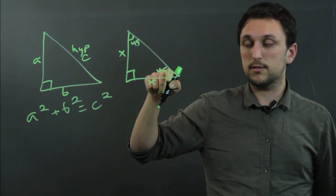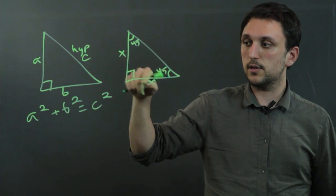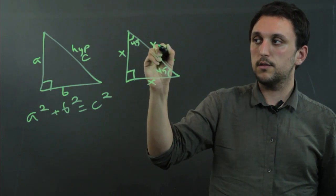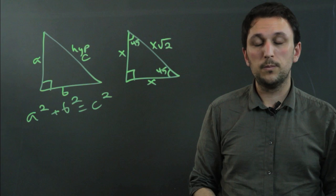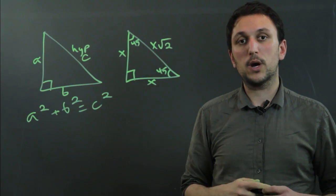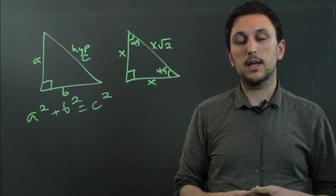And an interesting thing about isosceles right triangles is if this side is X and this side is X, then this side is always X root 2. So I'm Charlie Kasov, and you just learned some mathematical properties of right triangles. Thanks a lot.